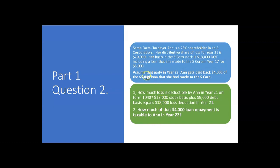Now here's the new facts. Assume that early in year 22, Ann gets paid back $4,000 of the $5,000 loan that she had made to the S-Corp. How much of that $4,000 loan repayment is taxable to Ann in year 22? What happened in year 21 is very important because we used up Ann's debt basis. Did we use all $5,000 of debt basis back in year 21 to absorb that big loss? Yes.